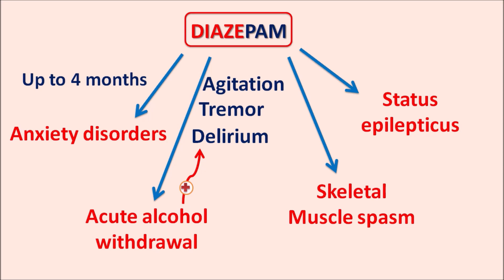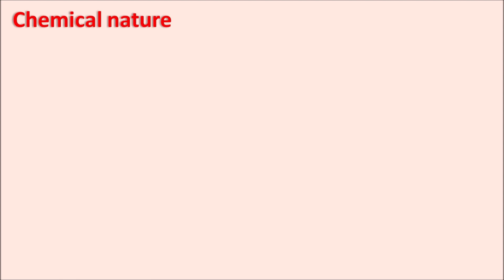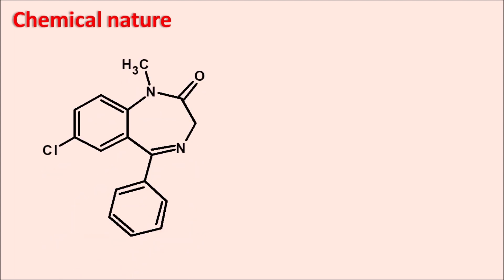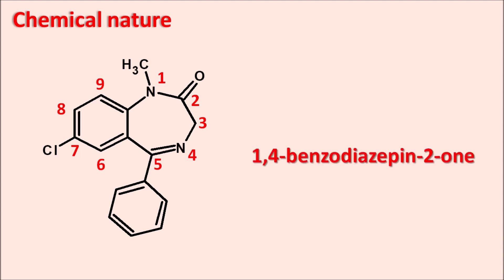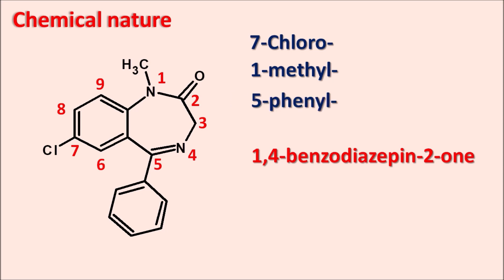Now let us see the chemical nature of this drug. This is the structure of diazepam. We start the numbering from the nitrogen: 1, 2, 3, 4, 5, 6, 7, 8, 9. The name takes the suffix 'benzodiazepine' with a ketone group at the second position, so it is 'benzo-diazepin-2-one', with nitrogens at the first and fourth positions — making it '1,4-benzodiazepin-2-one'. The side chains in alphabetical order: 7-chloro, 1-methyl, 5-phenyl, with a point of saturation at the third position indicated as 3H.